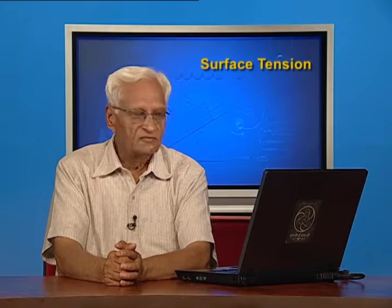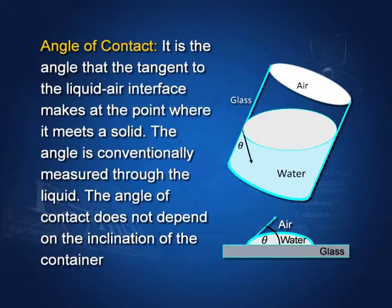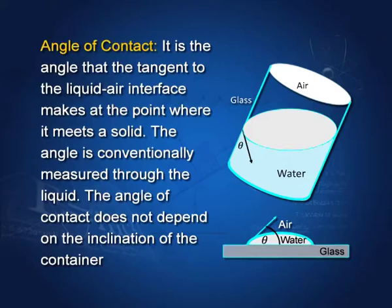Start with angle of contact. If this is the vessel in which water is contained, this is the water surface, there is air above it, and if I draw a tangent to this surface, then the angle between that tangent and the glass wall is called the angle of contact. This angle is the angle of contact and it is conventionally measured through the liquid.